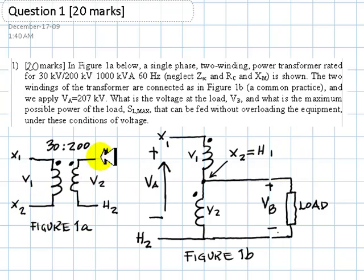This terminal is connected to this terminal H1. And then, we go ahead and apply a voltage VA of 207 kV. The first question is, what is this voltage VB? And secondly, what is the maximum possible power that we can feed here at the load?